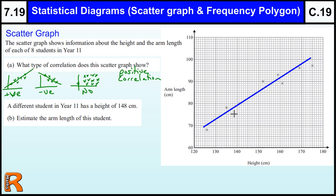We can see there that most of the points are very close to the line and there's nothing spread out. So this is close high correlation, but the key thing is positive. The closer the points are to the line, the higher it is. A different student in year 11 has a height of 148cm, estimate the arm length.